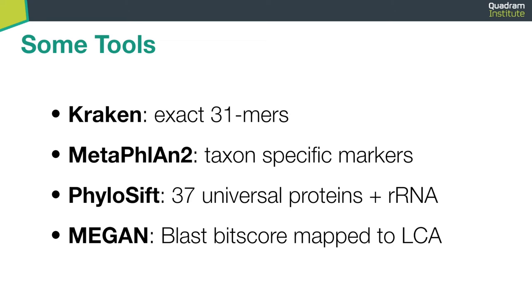At the same time, there is MetaPhlAn2, which uses taxon-specific markers. There is Phytosif that, on the other hand, uses universal proteins and RNAs.